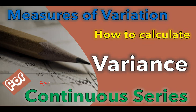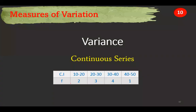So grouped frequency distribution, or grouped series. How to find out for continuous series? When it is given with a class interval, the class interval is given and the frequency is also given. So whenever it is given like this, we are calling it as the continuous series.